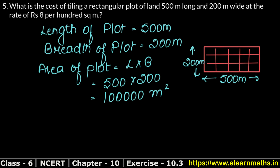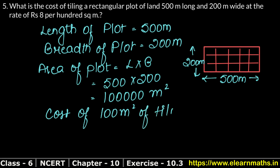The tile cost is Rs. 8 per 100 square meters. So if you put tiling on 100 square meters, it will cost Rs. 8.